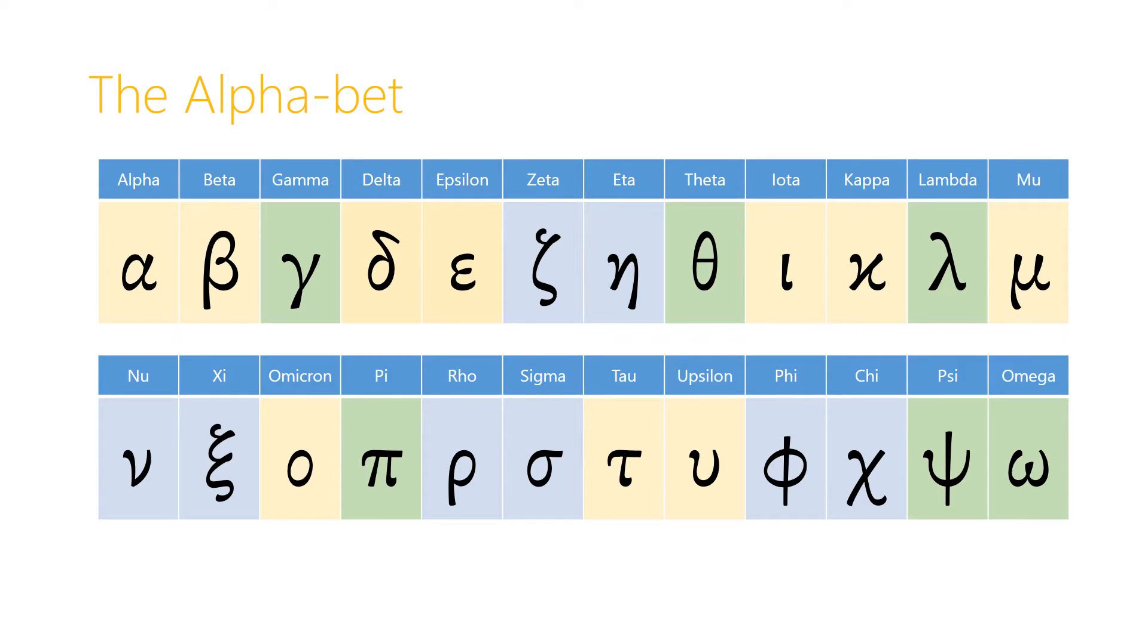Here's the whole alphabet again, the Greek alphabet, and the letters in yellow are the ones that we've already learned: Alpha, Beta, Delta, Epsilon, Iota, Kappa, Mu, Omicron, Tau, and Upsilon. The ones in green are the six letters that we're going to be learning about in this video.